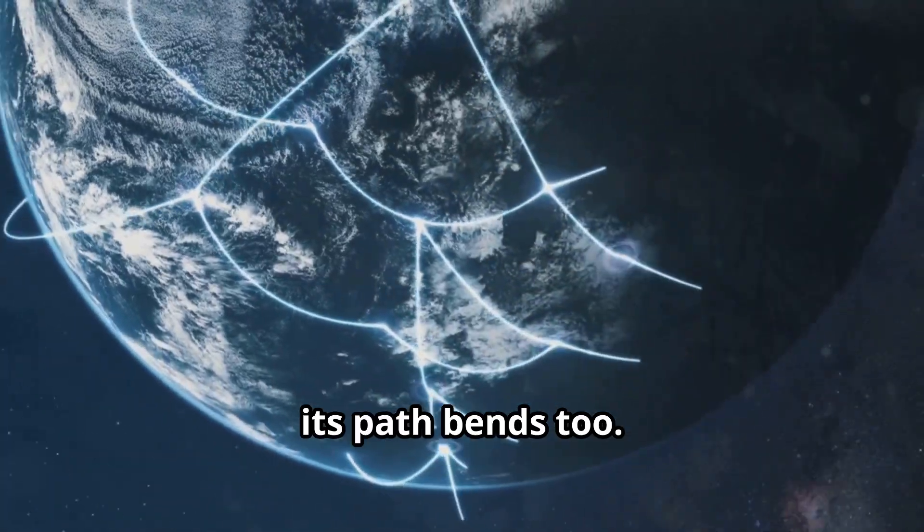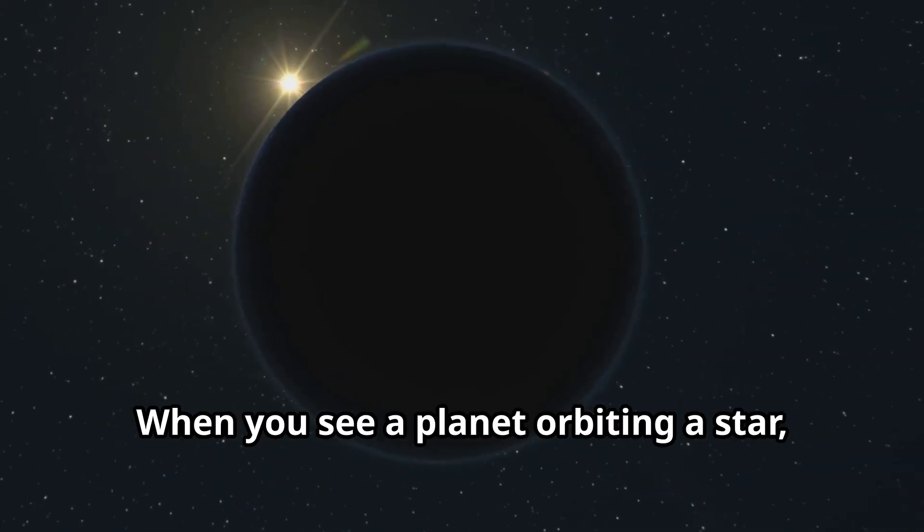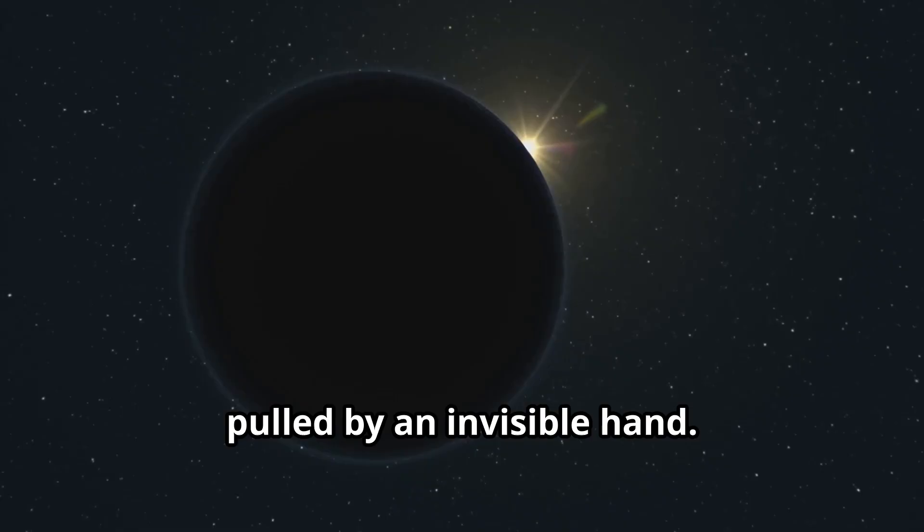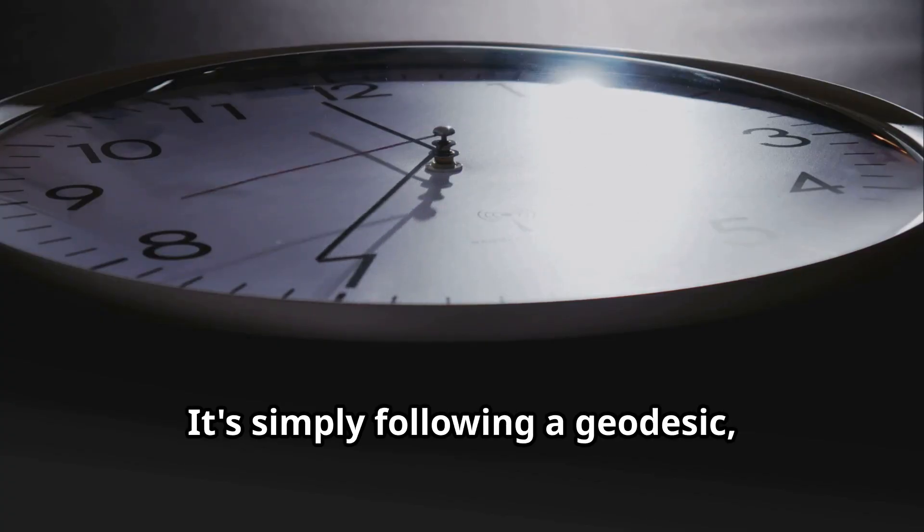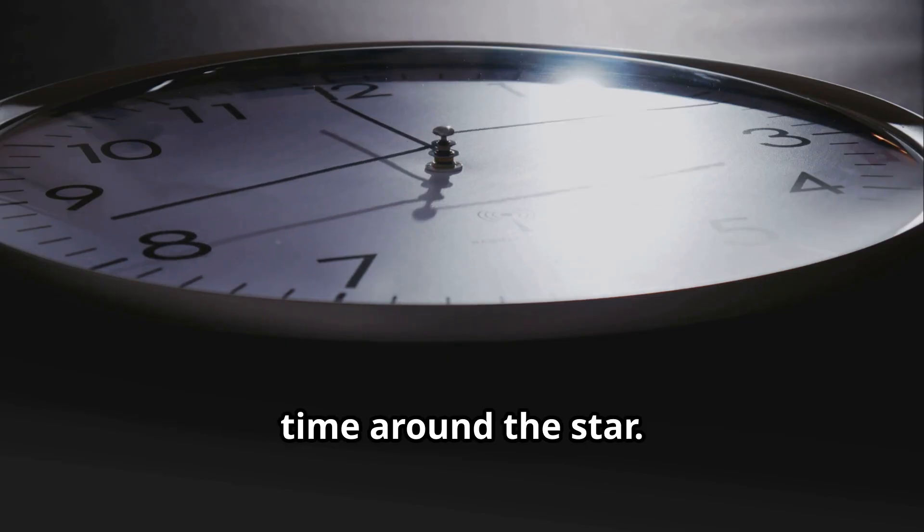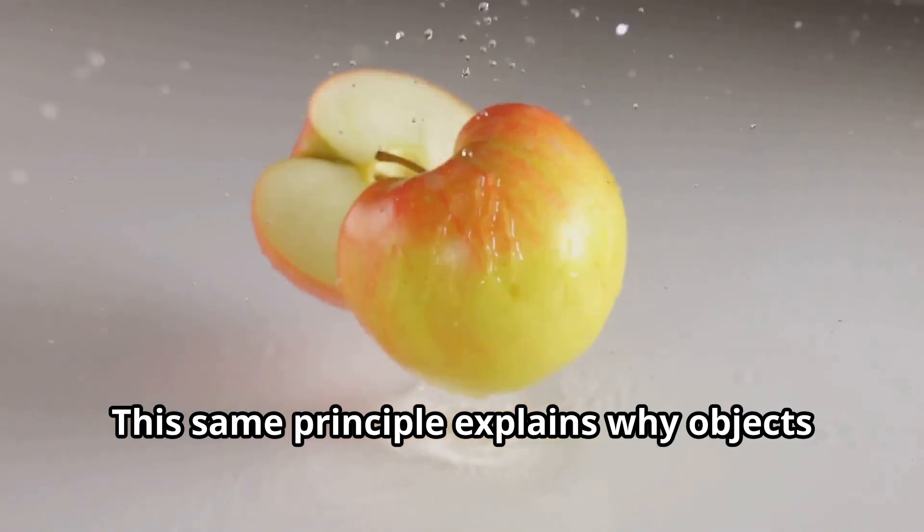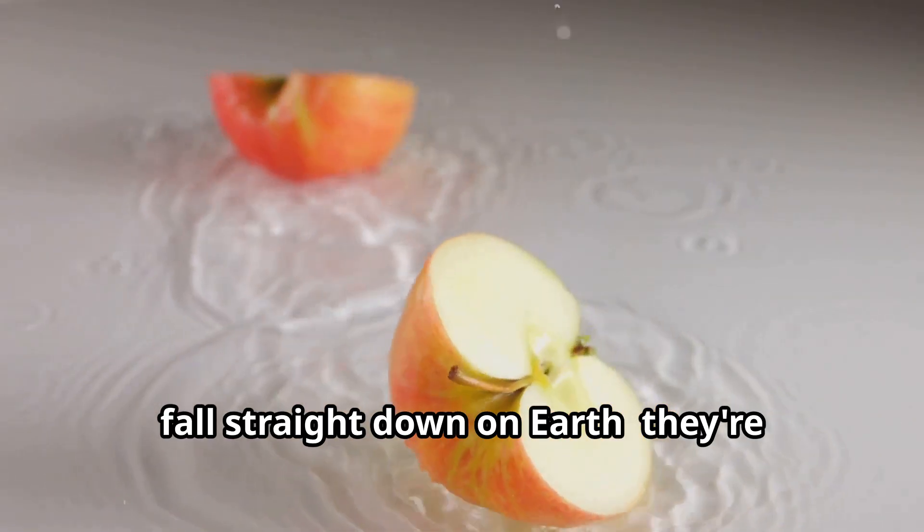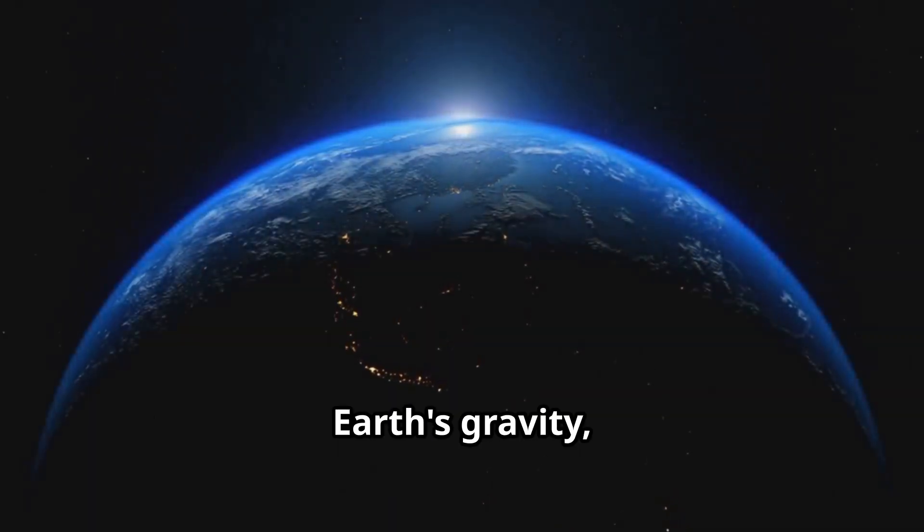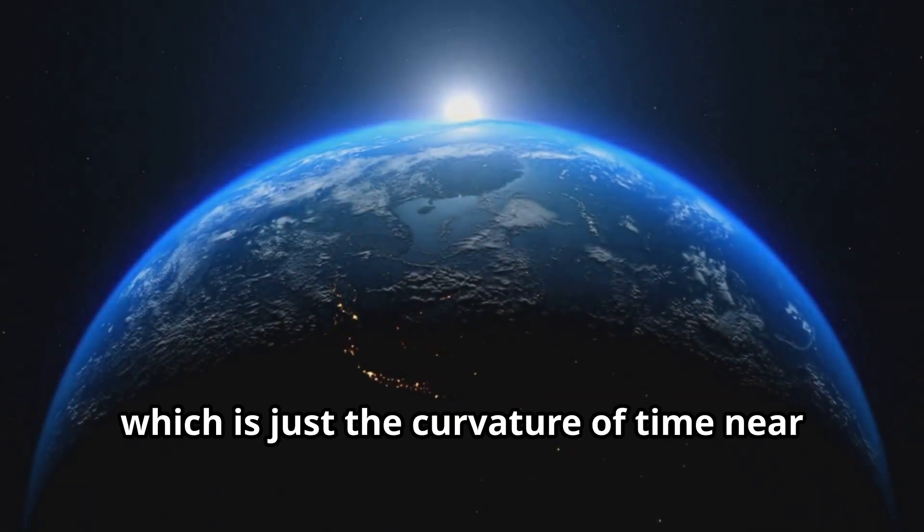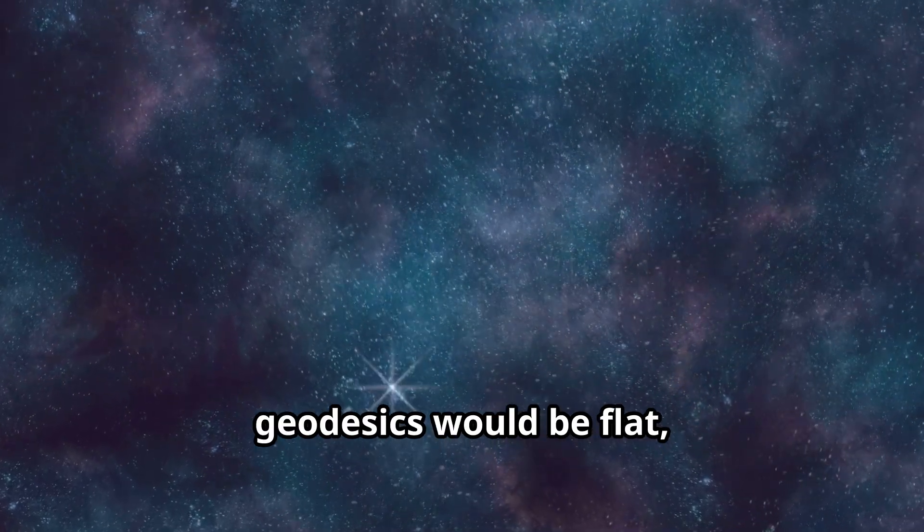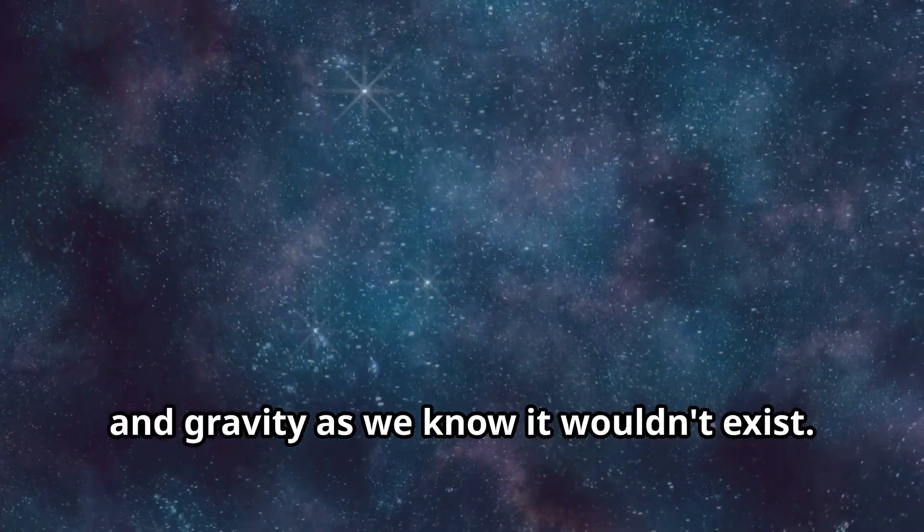When you see a planet orbiting a star, it's not being held in place by a rope or pulled by an invisible hand. It's simply following a geodesic, a curved path shaped by the slowing of time around the star. This same principle explains why objects fall straight down on Earth. They're tracing out the geodesic defined by Earth's gravity, which is just the curvature of time near its surface. Without bent time, geodesics would be flat, and gravity as we know it wouldn't exist.